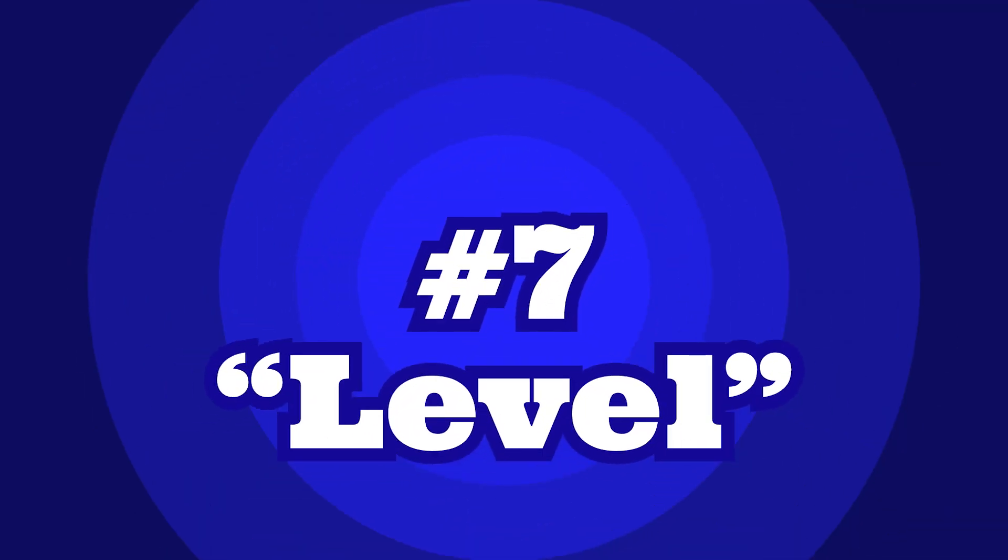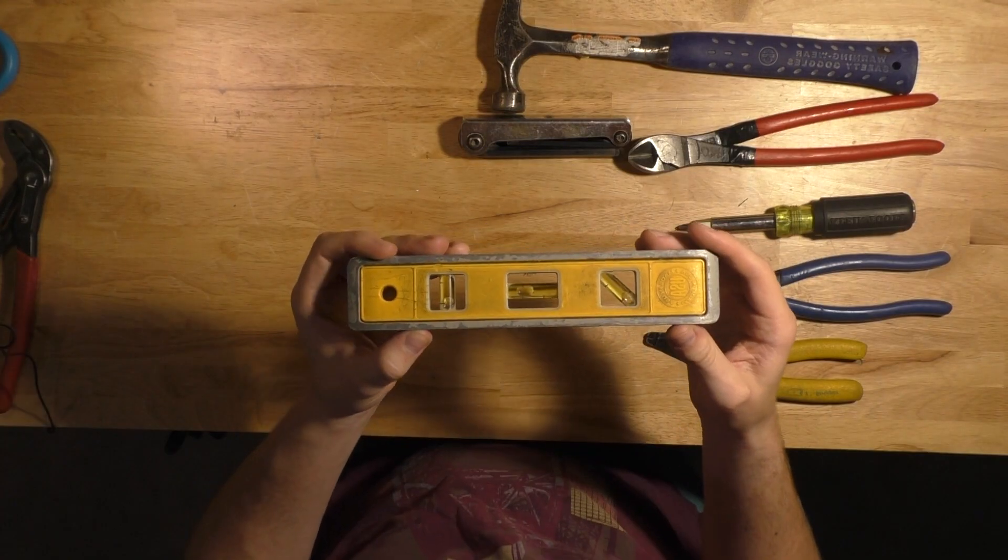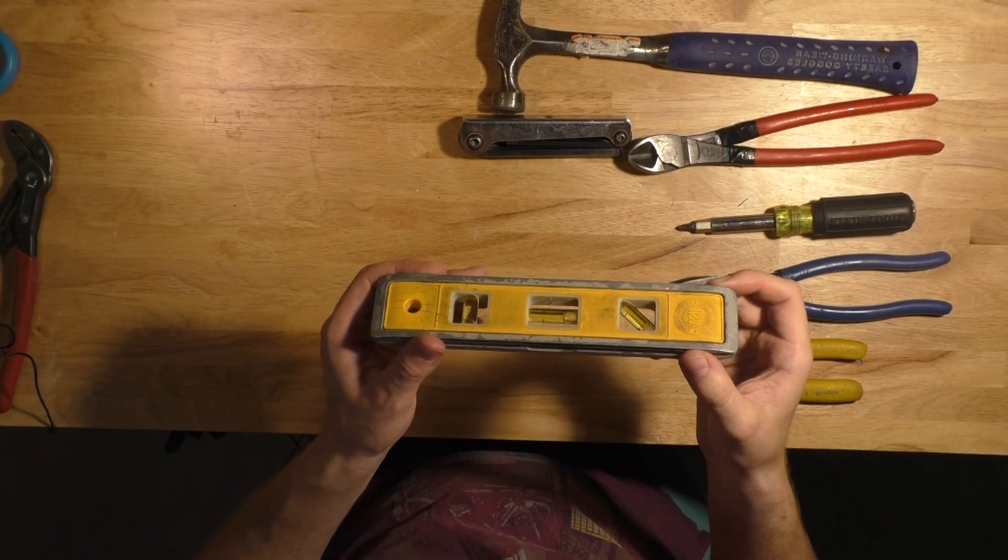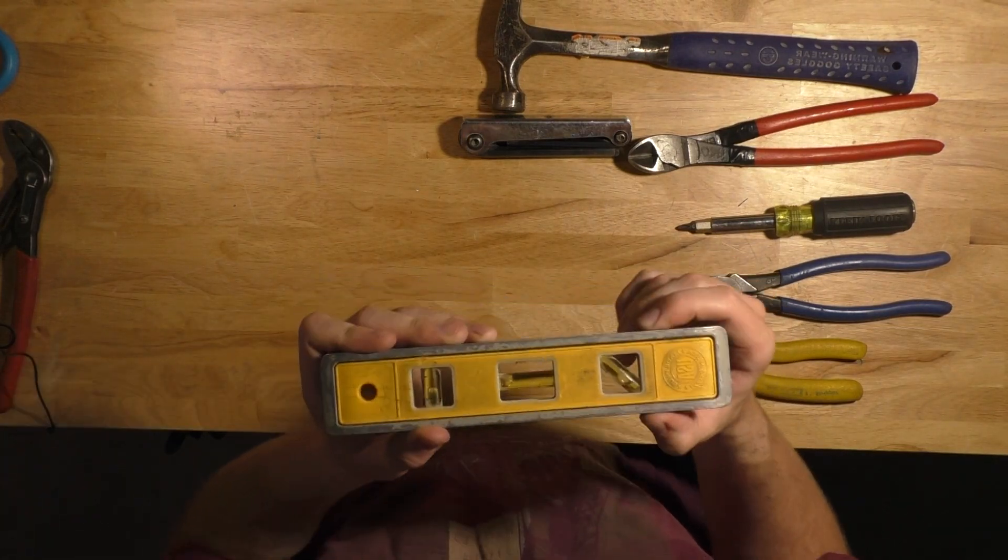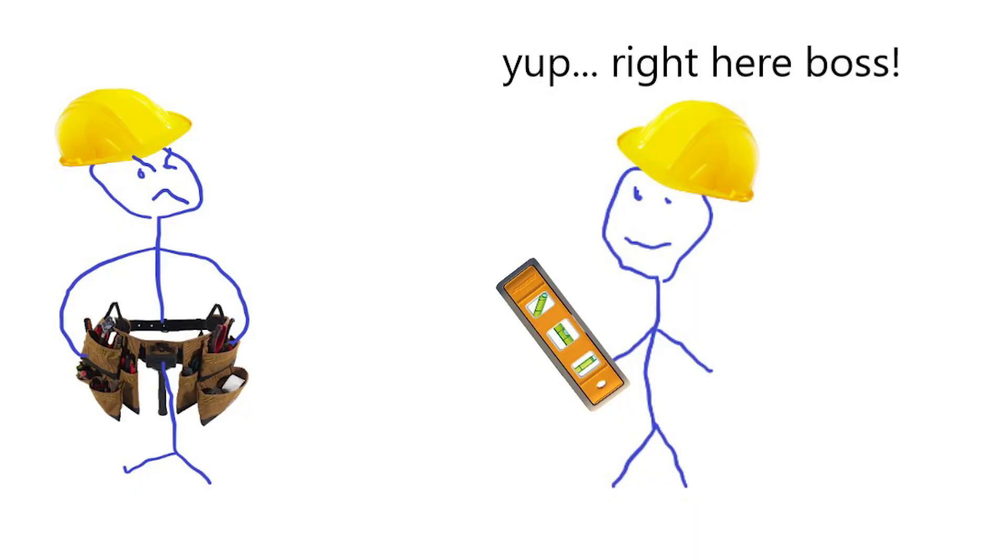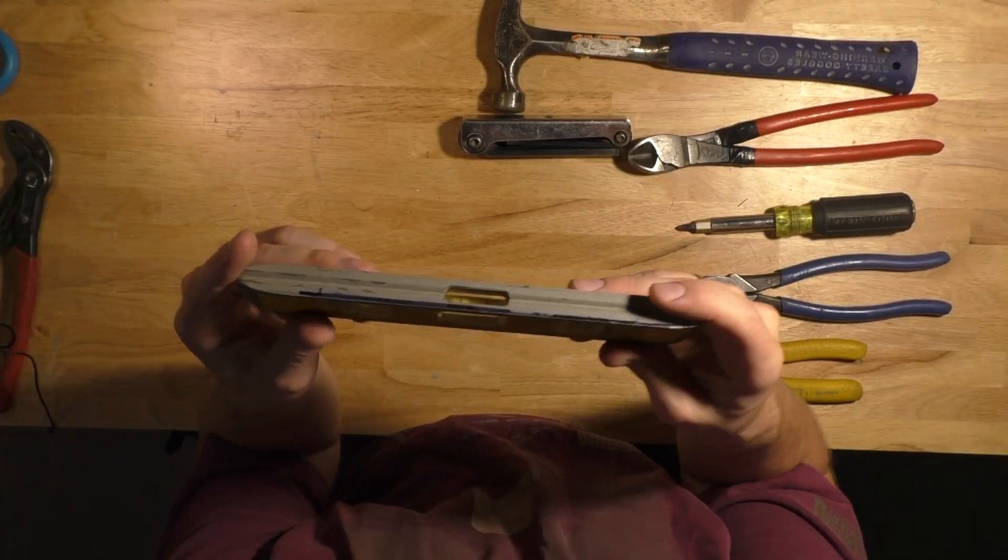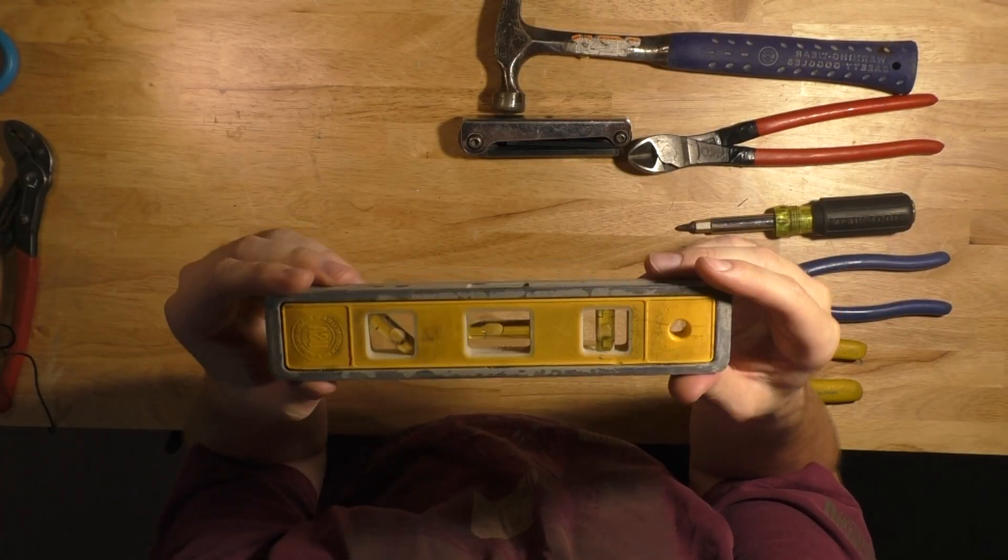Number seven on our list today is the torpedo level. If you have to mount any kind of equipment you don't want your journeyman to bark at you saying what's the matter with you, why don't you own a level or don't you own a level, it's one of those kind of lines. Owning a level will not only help you answer this question with a positive, as a matter of fact I do, it may even help you keep your equipment level in the first place and prevent an awkward nagging situation from your journeyman.